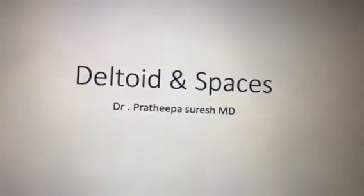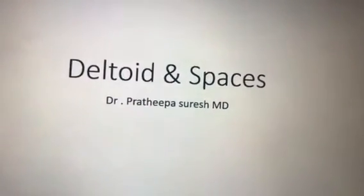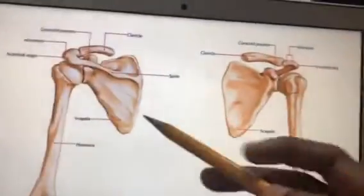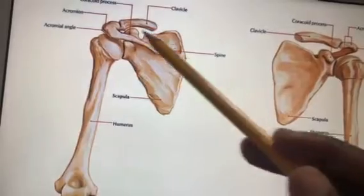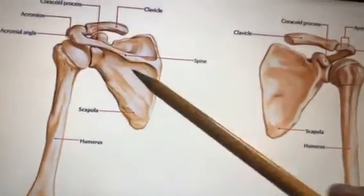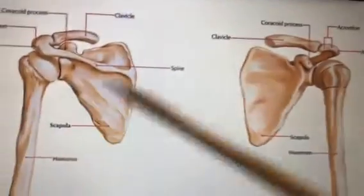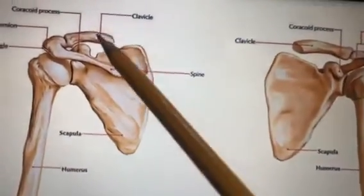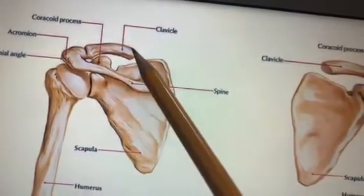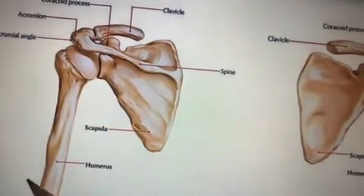Hi students. In this video we are going to see the deltoid muscle, the spaces beneath it, and the muscles beneath it. Look at this — this is the scapula, a well-known bone to all of you, and this is your humerus. This is the dorsal aspect and this is the ventral aspect of the scapula. Here you can see three prominences, and here in the front you have another bone — that is your clavicle.